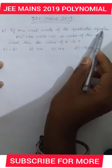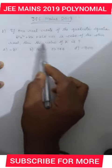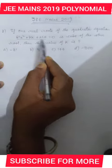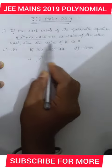We have a question: if one real root of the quadratic equation 81x² + kx + 256 = 0 is cube of the other root, then find the value of k. The equation we have, if one root is alpha, then the other will be alpha cube. One root is the cube of the other.